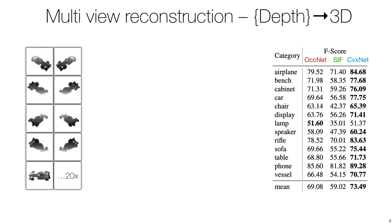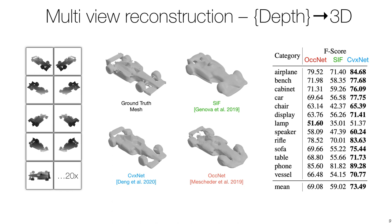We evaluate our method against others that attempt to reconstruct 3D geometry given multiple depth maps. We compare our results against leading methods such as occupancy networks and structured implicit functions. Note we achieve state-of-the-art performance by a significant margin on this task.